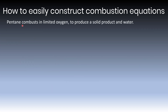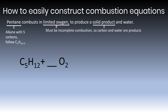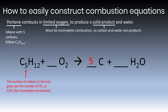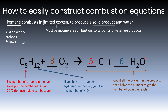Final example: pentane combusts in limited oxygen to produce a solid product and water. Pentane is an alkane with five carbons, so its formula is C₅H₁₂. Limited oxygen means incomplete combustion, and since it forms a solid product, it must be carbon (not carbon monoxide). Applying the rules: five carbons gives five C, twelve hydrogens gives six H₂O, six oxygens on the right, halved gives three O₂. The equation is now balanced.